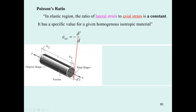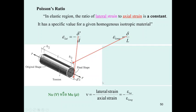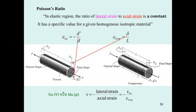When you pull the lumber, it will elongate, and it is going to contract in the lateral direction. So the lateral strain is negative due to this contraction — it equals negative delta (the contraction value) divided by the diameter. The longitudinal strain is the total elongation divided by the original length. When you divide the lateral strain by the axial strain with a negative sign in front, you get the Poisson ratio. Poisson's ratio is always positive because of the negative sign applied to the contraction value.